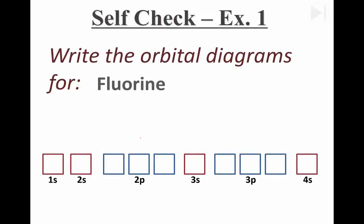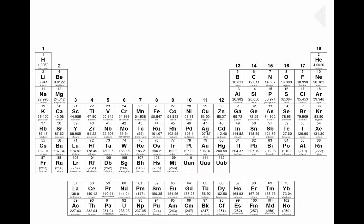Let's try one of these. We're going to draw the orbital diagram for fluorine. Now when you're drawing an orbital diagram, you're going to need to look on your periodic table. We're going to look up fluorine on our periodic table and find it right over here. So the element fluorine, element number 9, should have 9 electrons, and that's what we're going to represent.